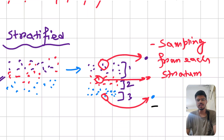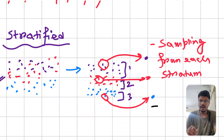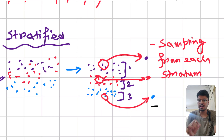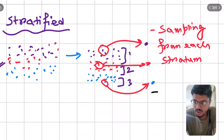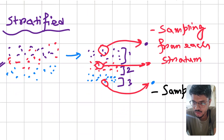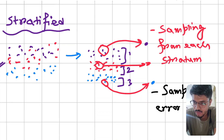The disadvantage of stratified sampling is that the sampling error calculation is very difficult. This difficulty in sampling error calculation is the main disadvantage.